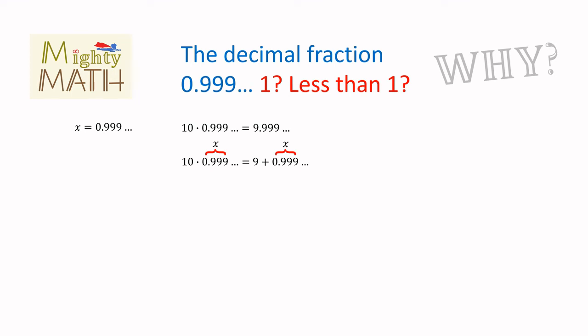Back to our equation. Remember, 0.999... is x. So we can write 10x equals 9 plus x. Subtract x from both sides. 9x equals 9. Divide by 9. And what do you know? Our x, the repeating decimal fraction 0.999... is again exactly 1.